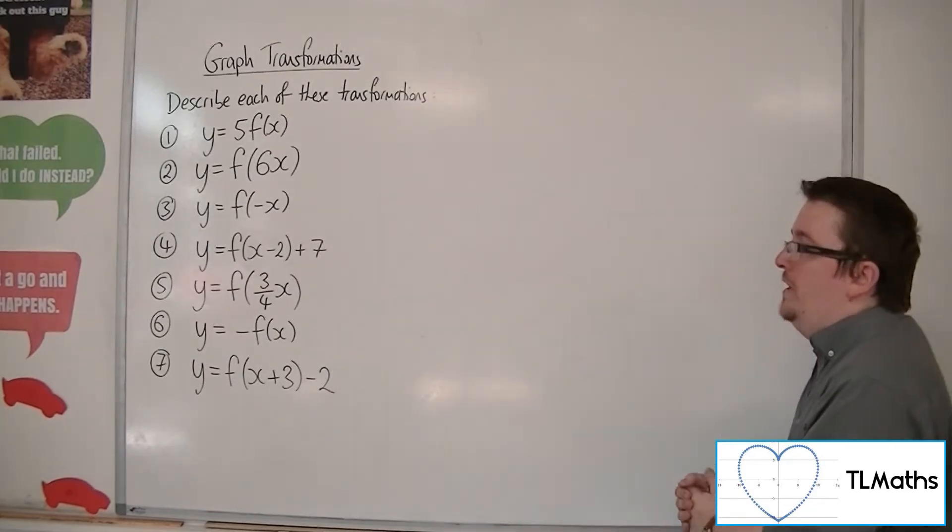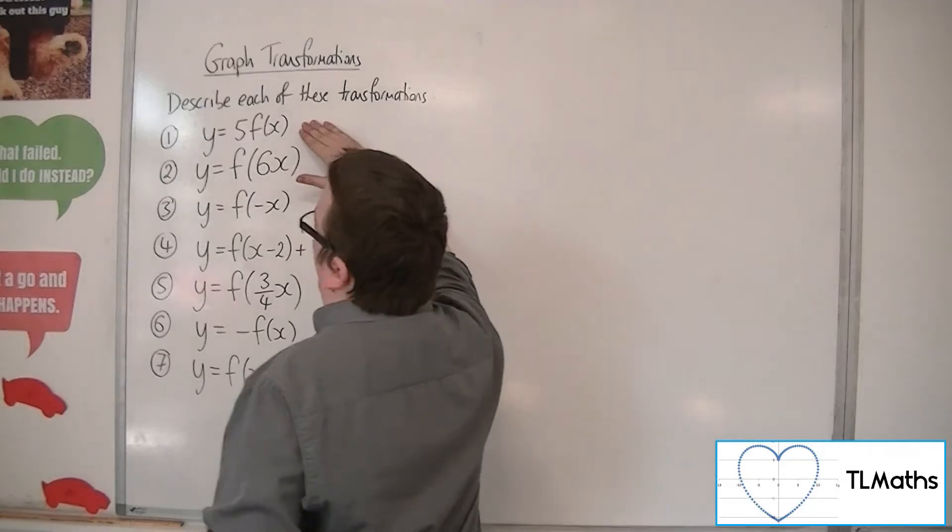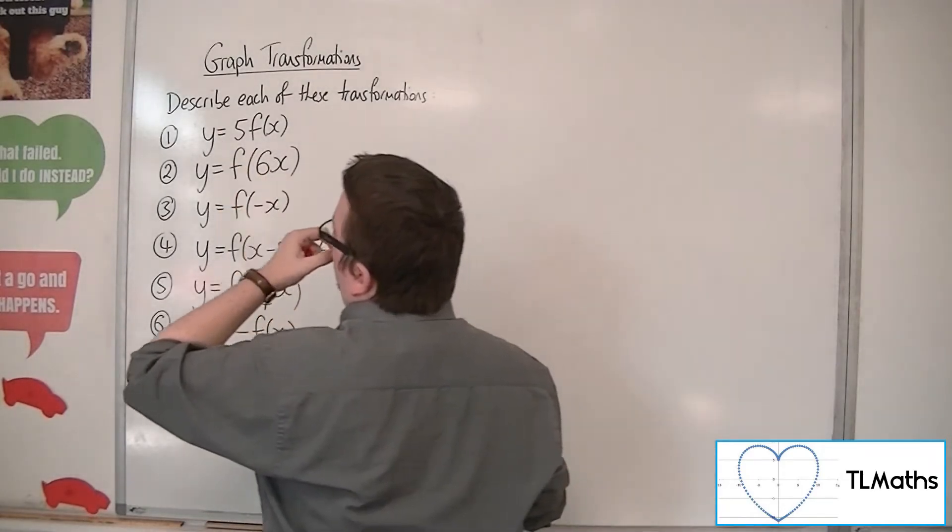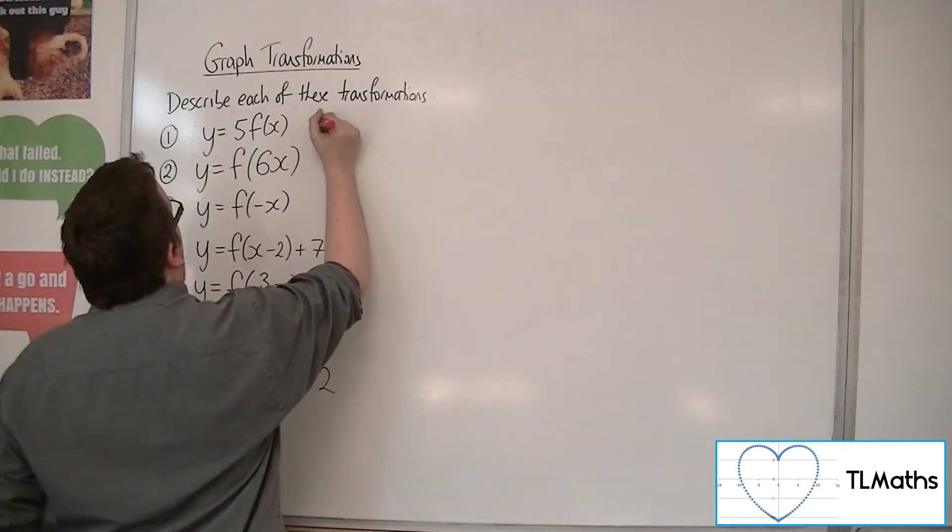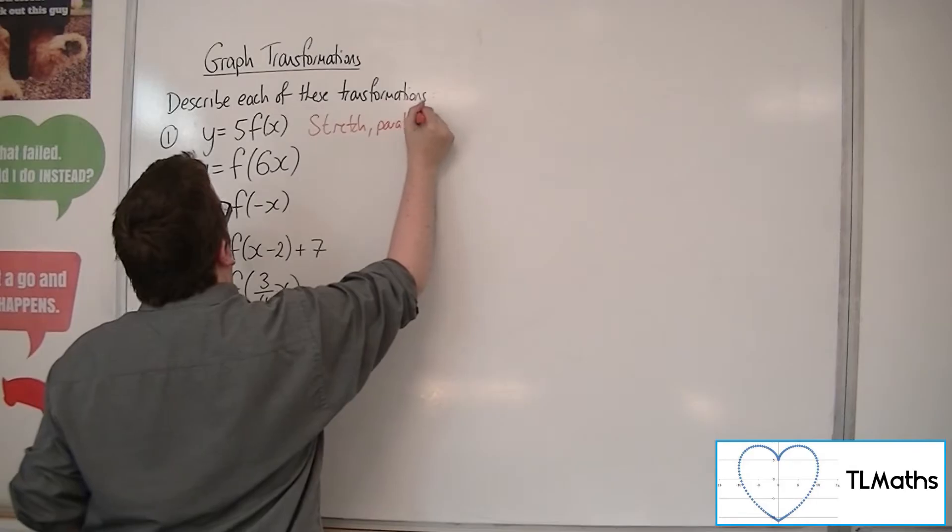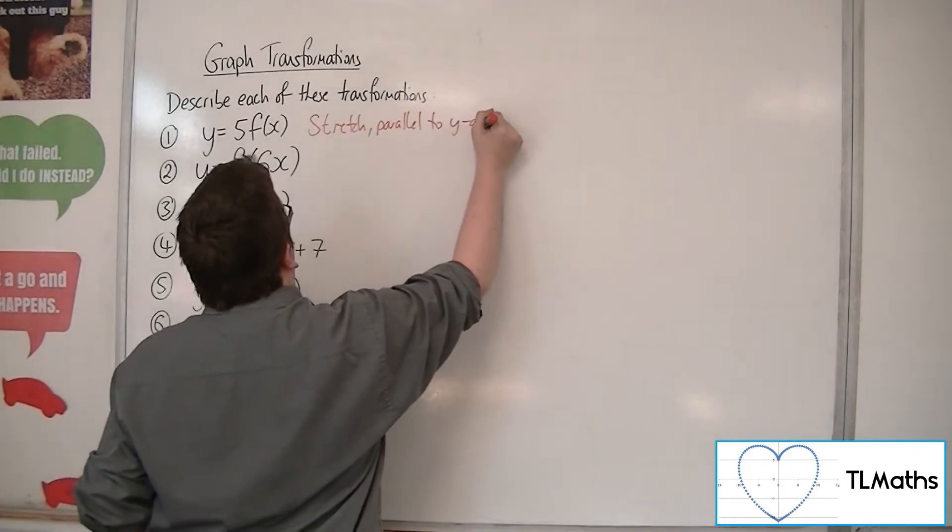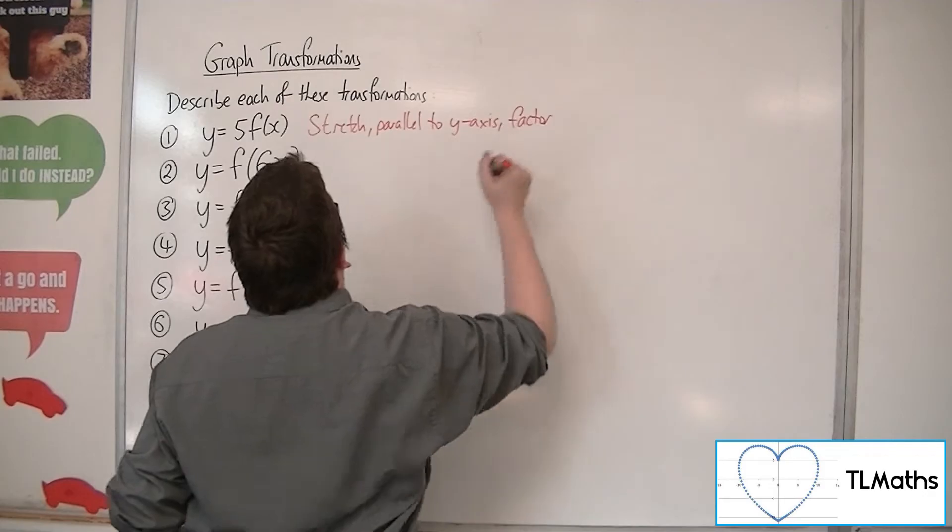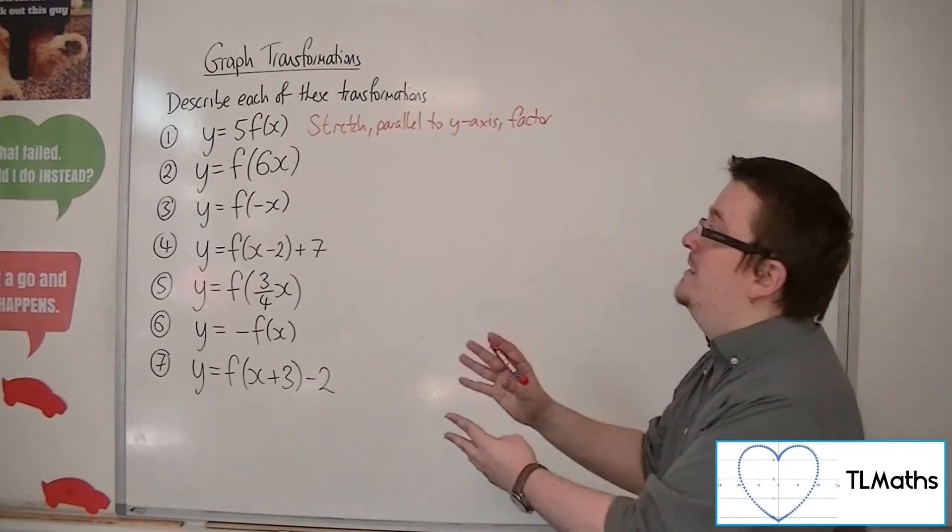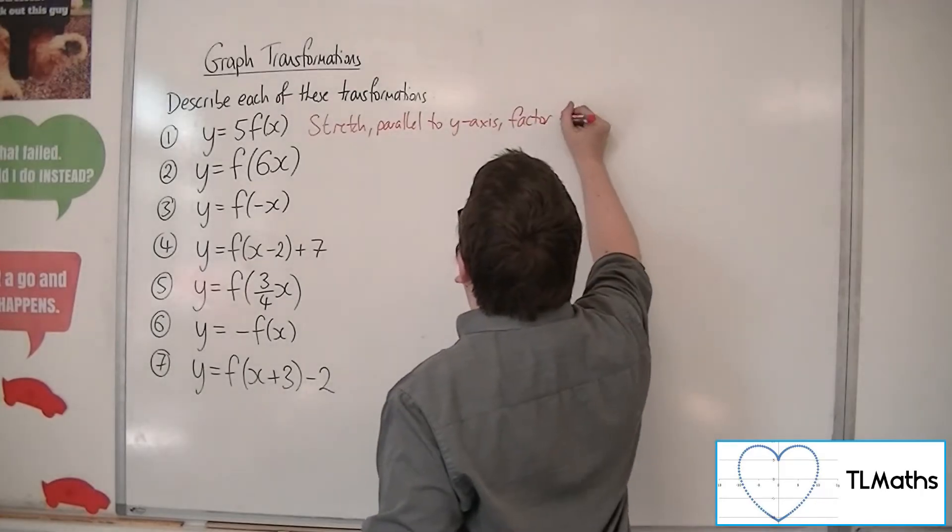We need to get all the information down. For this first one, number one, because the 5 is outside the f of x, this is a stretch parallel to the y-axis. Because it's parallel to the y-axis and outside of the function, it stays as shown, so it's factor 5.